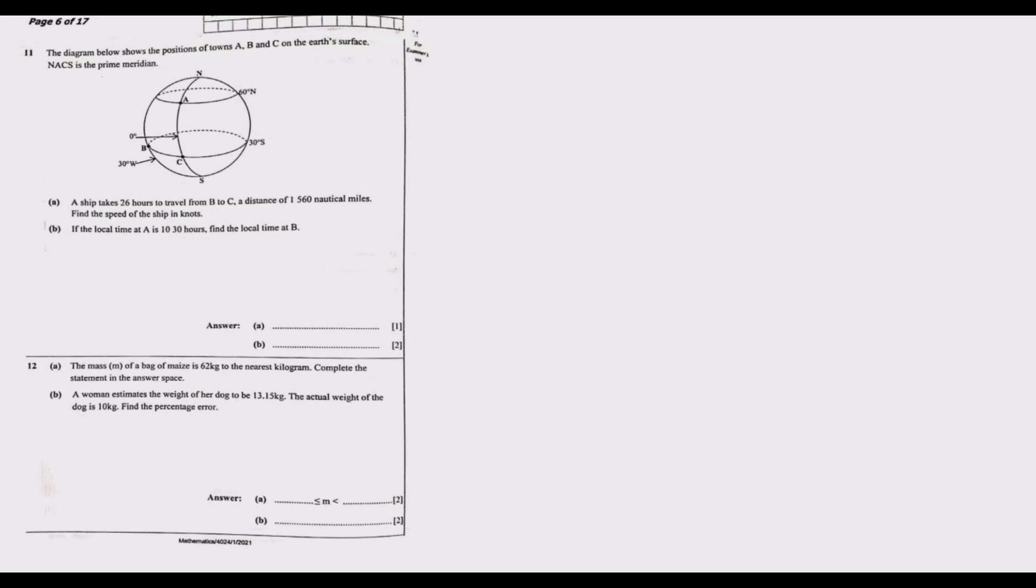The diagram below shows the position of towns A, B and C on the earth's surface. NSC S is the prime meridian or GMT. A ship takes 26 hours to travel from B to C, a distance of 1560 nautical miles. Find the speed of the ship in knots. Generally we know that speed is equal to distance covered over time.